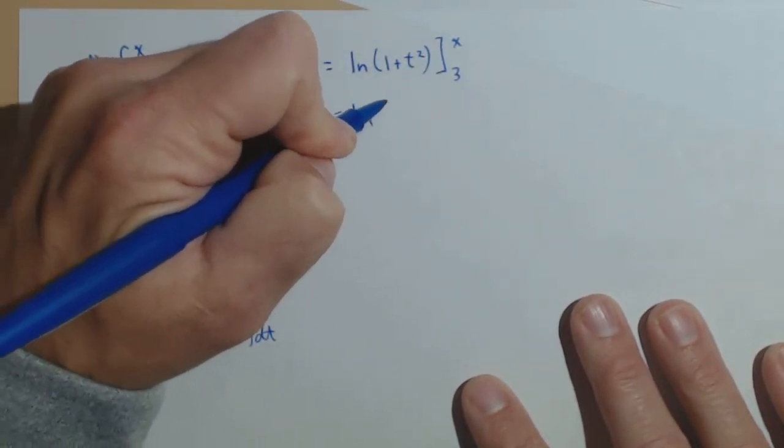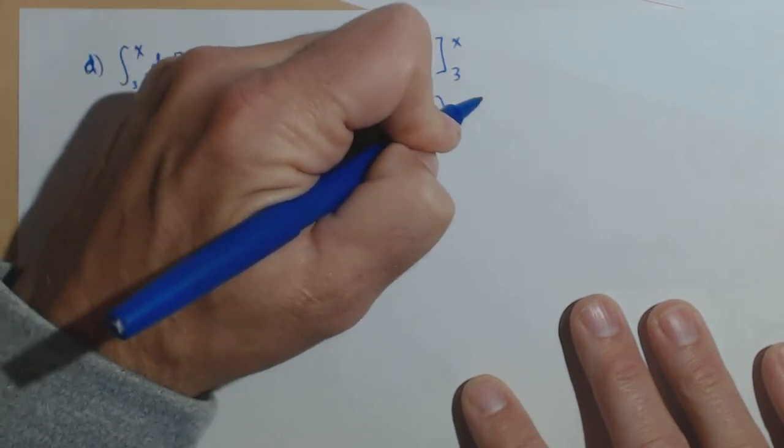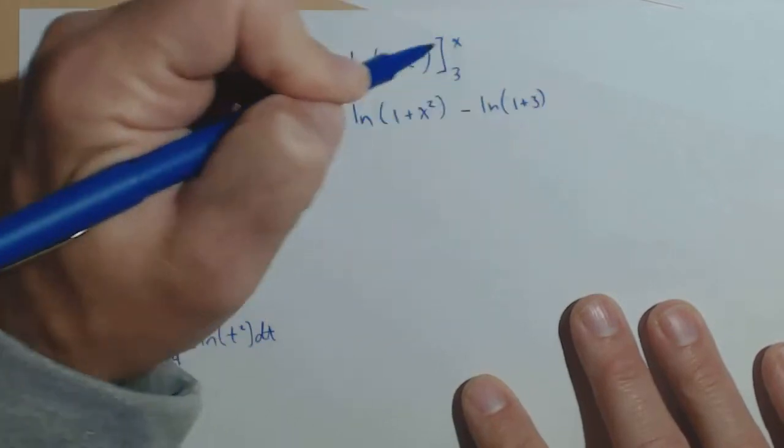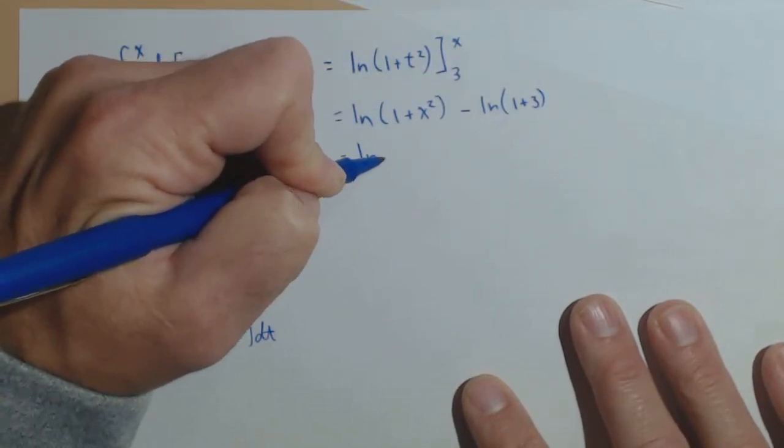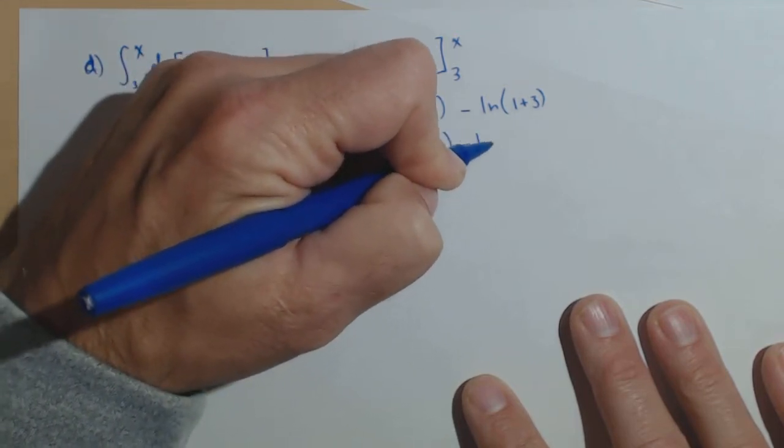So, we're gonna have ln of one plus x squared minus ln of one plus x squared minus ln of one plus three. So, ln of one plus x squared minus ln of four,